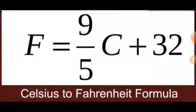There is a formula given for conversion of temperature from Celsius scale to Fahrenheit scale. For converting, you write F equals 9 by 5 into C plus 32. That means you multiply the temperature in degree Celsius by 9 by 5 and then add 32. This is the required formula.